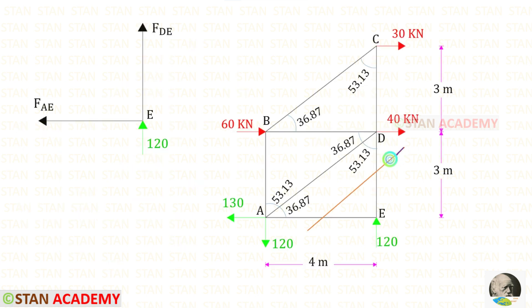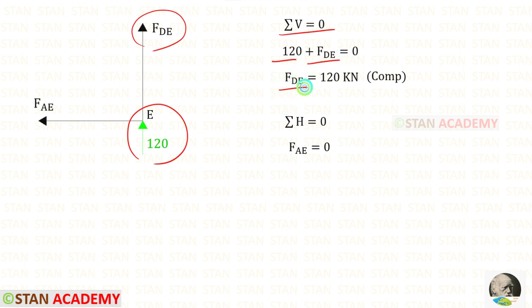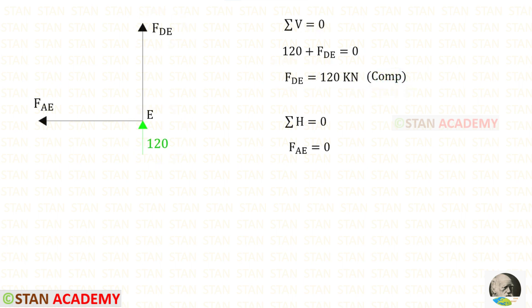Let us make the first section like this, take this part, and find the member forces. First, let us apply Sigma V = 0. The reaction 120 and FDE are both acting upwards, so both of them are positive. For FDE, we will get a negative value — that means it is compressive. Let us apply Sigma H = 0. There is only one horizontal force, FAE, so FAE = 0.